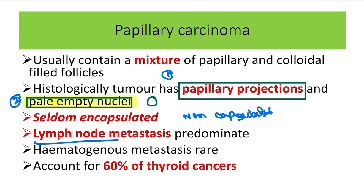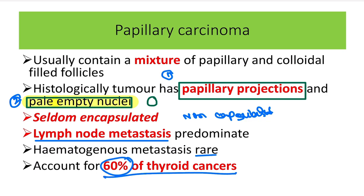Lymph node metastasis occurs and is the predominant route of spread — metastasis travels via lymphatic vessels and lymphatics. Hematogenous metastasis is very rare and usually does not occur. Papillary carcinoma accounts for 60% of thyroid cancers, making it the most common thyroid malignancy.